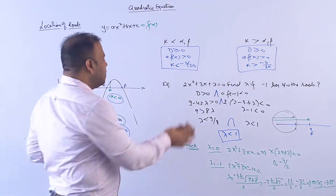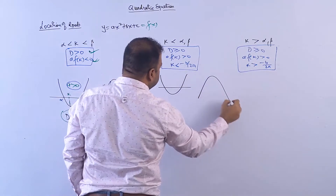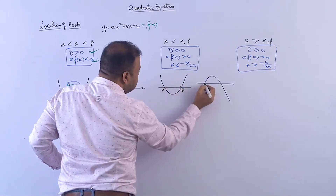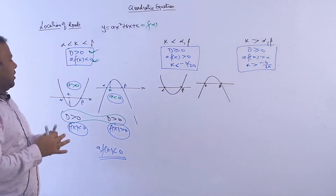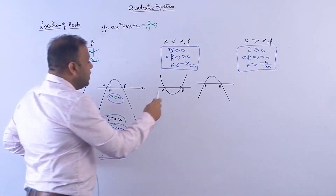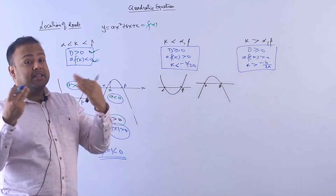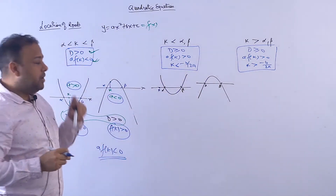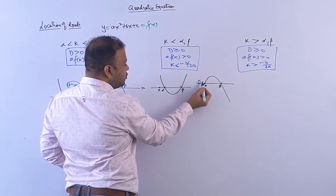Let's continue with the second condition: k is less than both alpha and beta. We actually have three zones — less than both, in between the roots, greater than both. So in this case, k will be in the first zone (before alpha), less than both alpha and beta.